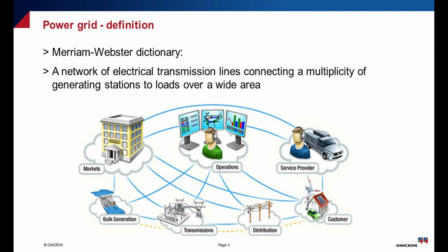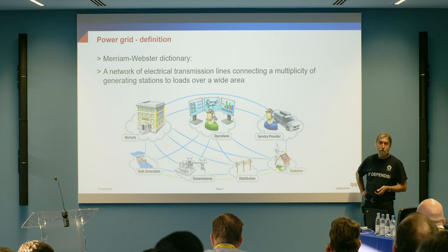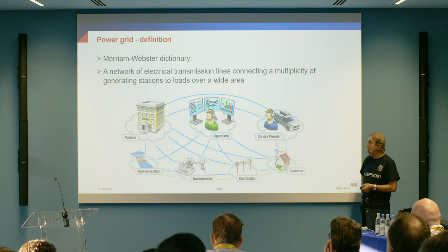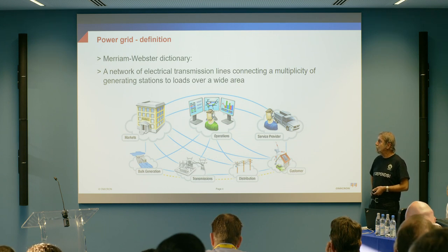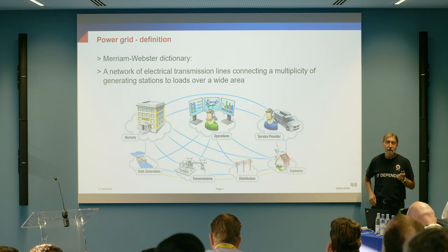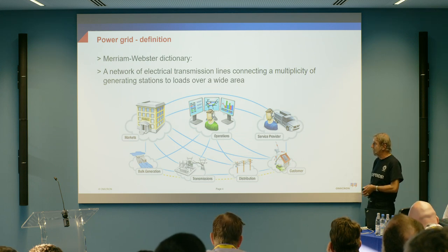We are talking about the power grid. So we need to think about what do we call the power grid and what makes the power grid a smart one. To avoid any misunderstanding, I always try to look for definitions on the web. In the Merriam-Webster dictionary, the definition of a grid is a network of electrical transmission lines connecting a multiplicity of generating stations to loads over a wide area.